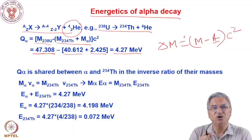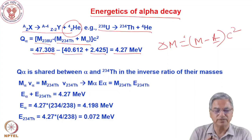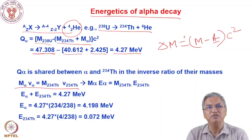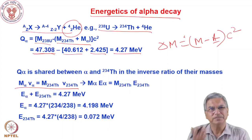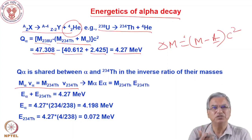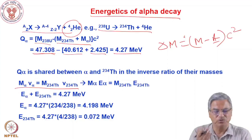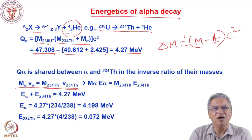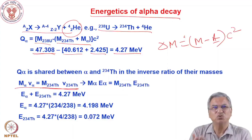How is this energy shared? How do we calculate the energy of the alpha particle? The basic concept is that since uranium-238 is stationary when the alpha particle is emitted, the momentum of this nucleus is zero. When it splits into two particles, the net momentum should again be zero. So M_alpha × V_alpha = M_234 × V_234 — the momenta of the alpha particle and thorium-234 are equal in magnitude and opposite in direction, so the net momentum is zero.